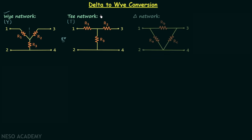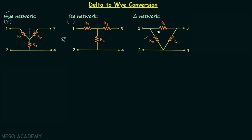Now we will understand what a delta network is. In a delta network, three resistors are connected in such a way that they form a delta shape. When you flip the network 180 degrees, you will find RA, RB, and RC forming a structure which looks like the Greek letter delta. Therefore we call this a delta network.